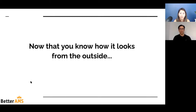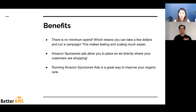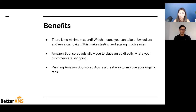Now you know how it looks from the outside — in search and in product detail pages. Let's look at the benefits of running these types of campaigns. First, there's no minimum spend, which means you can take a few dollars, run a campaign, and spend $5, $10, or $15. This makes testing and scaling much easier. You can decide whether you want to go aggressive or conservative. Amazon sponsored ads allow you to place an ad directly where your customers are shopping — whatever keywords or products you want to target. Running Amazon sponsored ads is also a great way to improve your organic rank, so don't leave it for last.